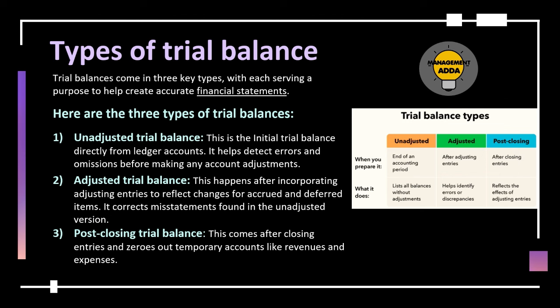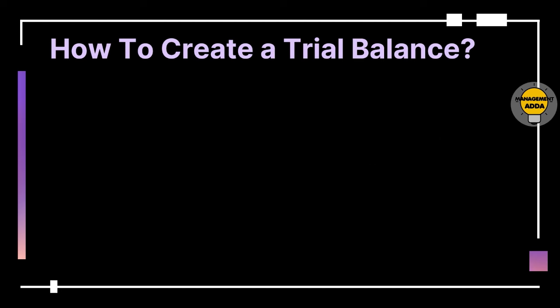Trial balance has three types: first, unadjusted trial balance; second, adjusted trial balance; and third, post-closing trial balance. The unadjusted trial balance is the initial trial balance directly from ledger accounts — it helps detect errors and omissions before making any account adjustments. The adjusted trial balance happens after incorporating adjusting entries to reflect changes for accrued or deferred items, correcting misstatements found in the unadjusted version. The post-closing trial balance comes after closing entries and zeros out temporary accounts like revenues and expenses.